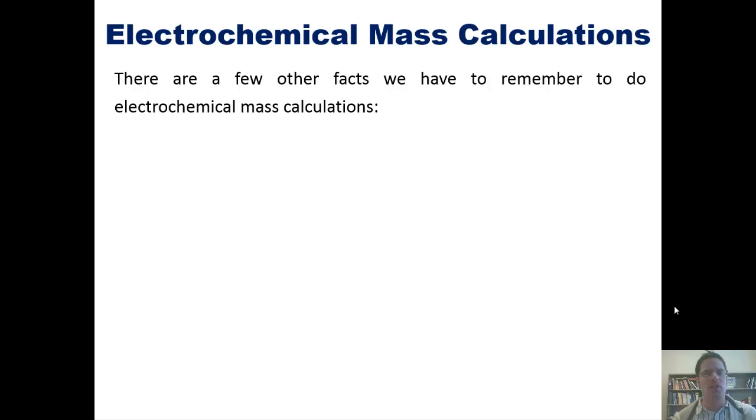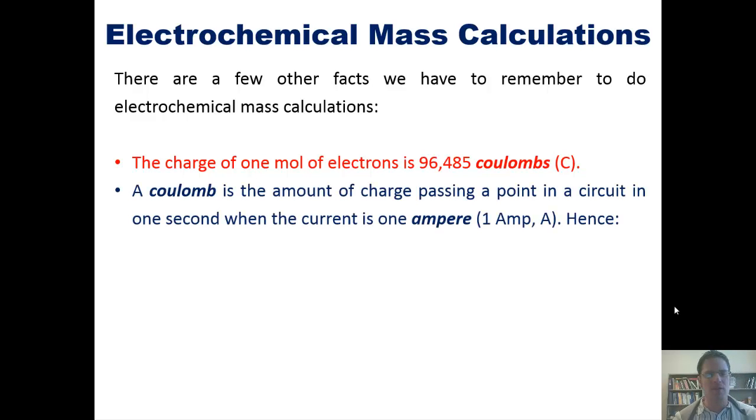So there are a few other facts that we have to remember to do electrochemical mass calculations. First, the charge of one mole of electrons is 96,485 coulombs. Second, a coulomb is the amount of charge passing a point in a circuit in one second when the current is one ampere or one amp, abbreviated as a capital letter A. Hence, coulombs equals amperes times seconds. Okay, you got that down? Make sure you got that down.